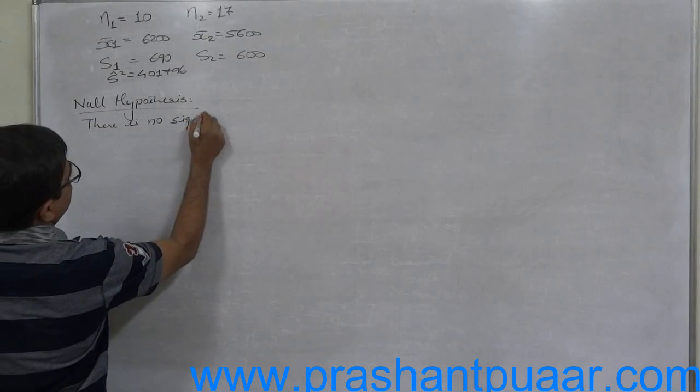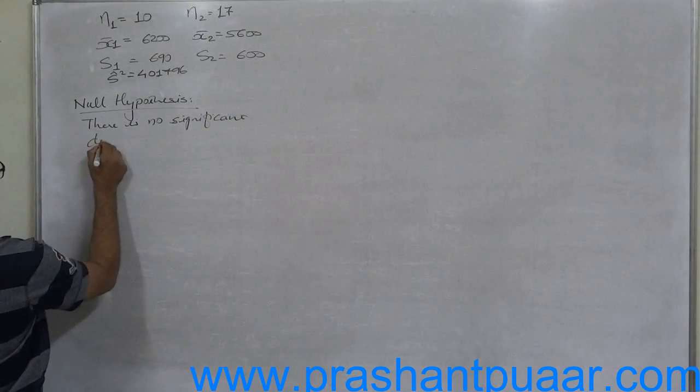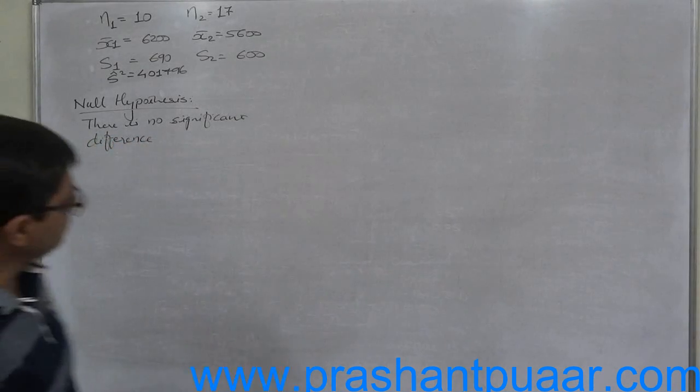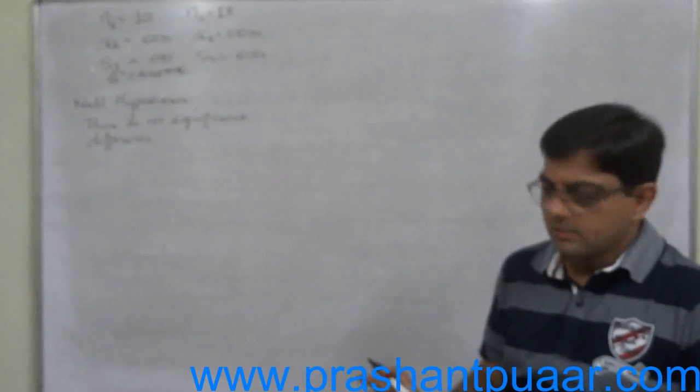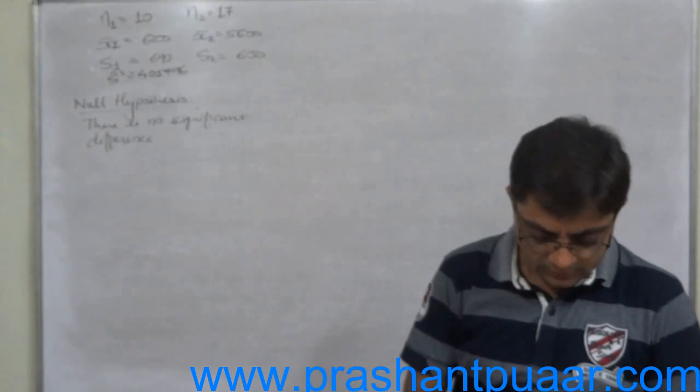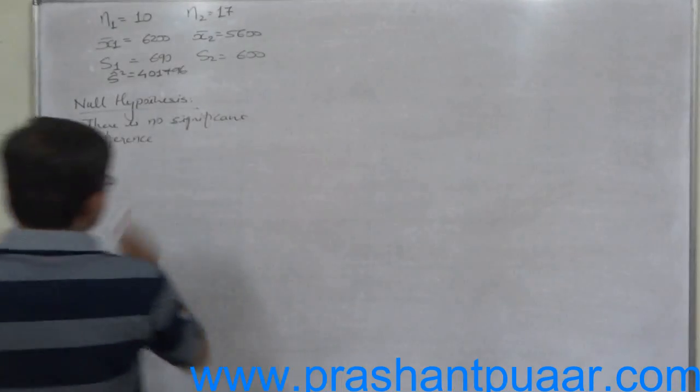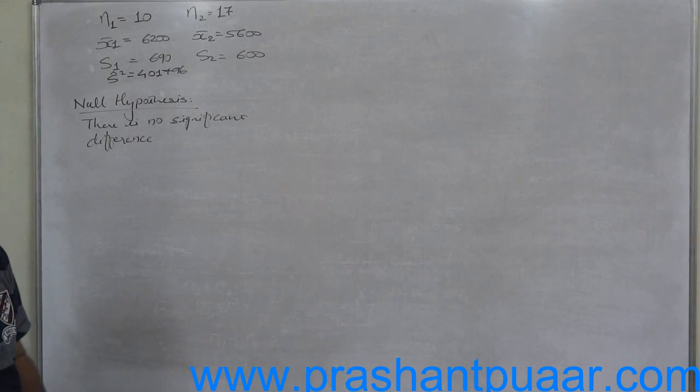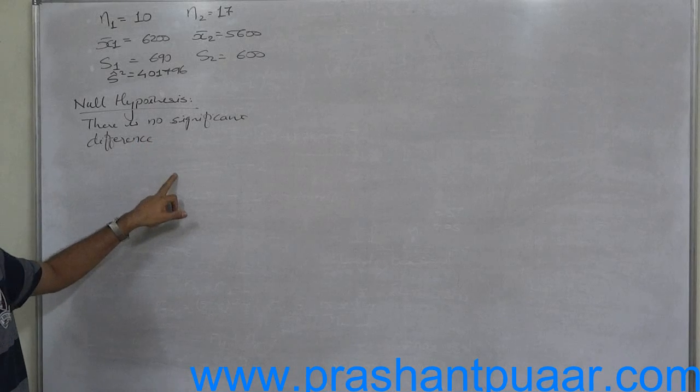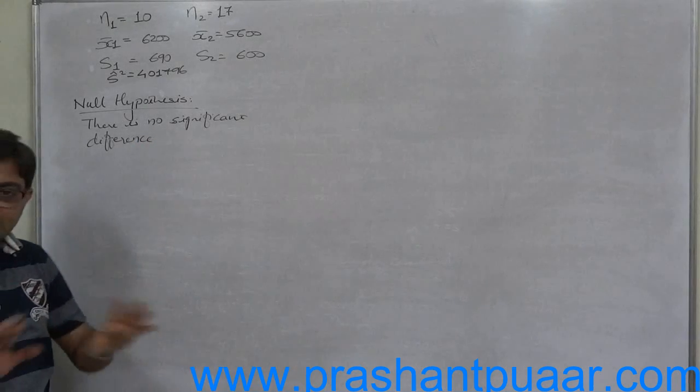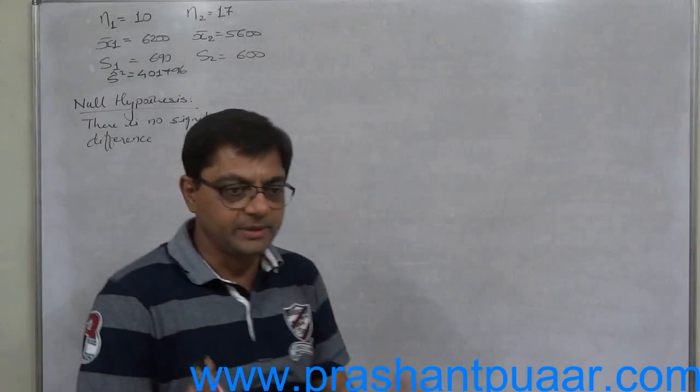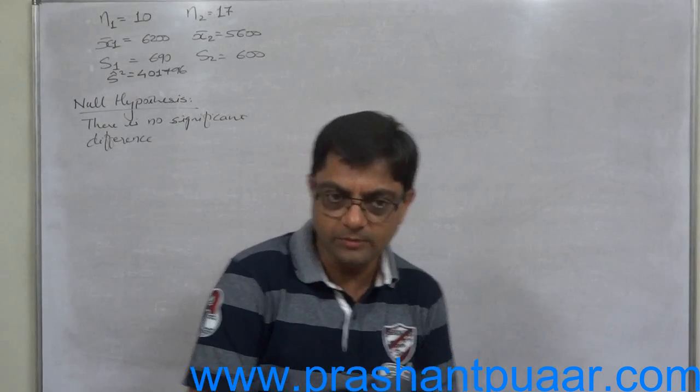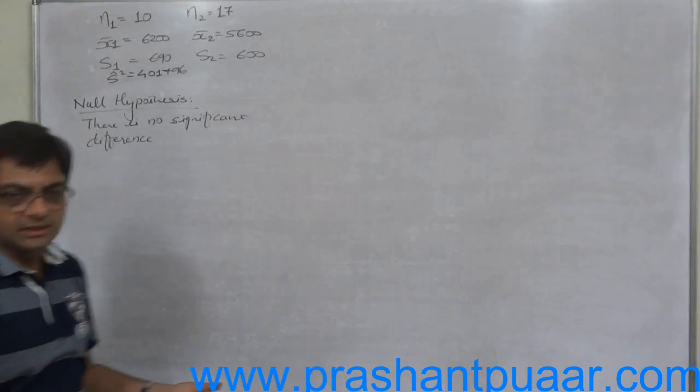Null hypothesis: there is no significant difference. In null hypothesis we always have to take no difference. This is also known as no difference hypothesis. The difference between two parameters is null or empty, that's why it is called null hypothesis. It is also known as no difference hypothesis. We always take there is no difference between the two parameters, whether it is sample mean and population mean, or mean of first population and mean of second population, or any other parameter.